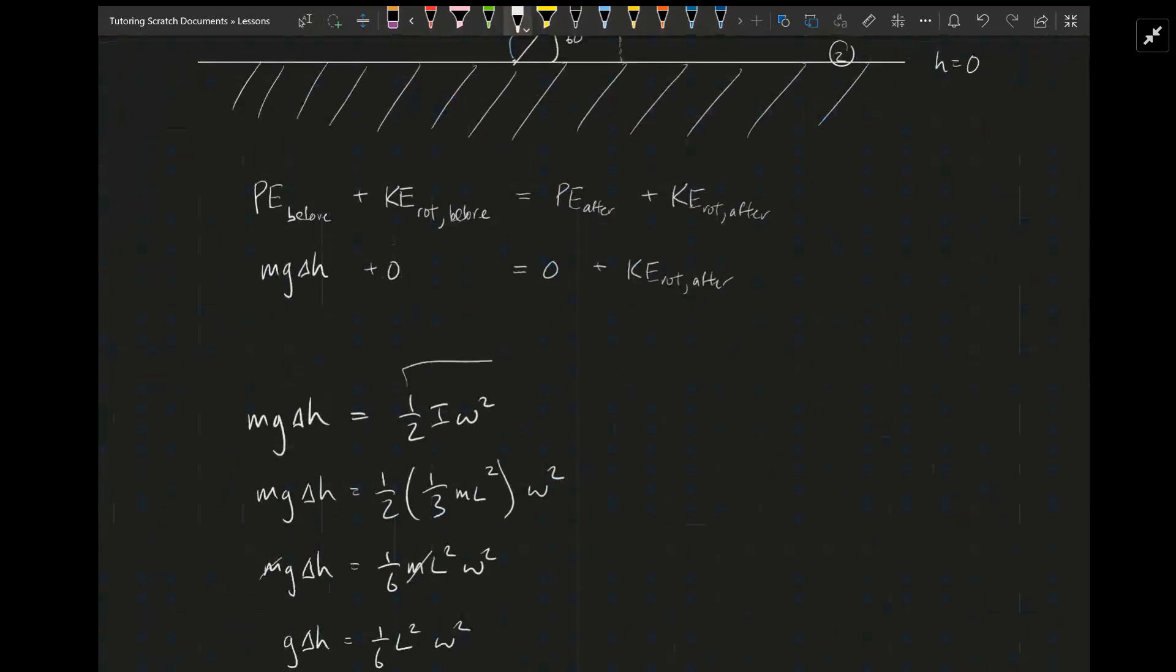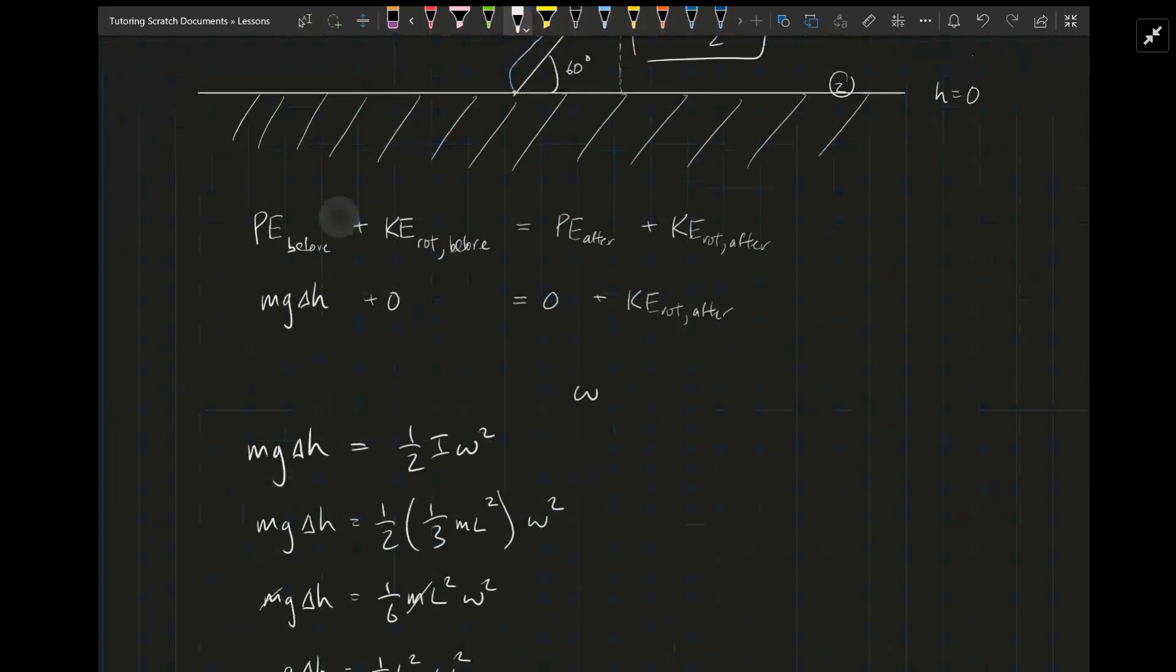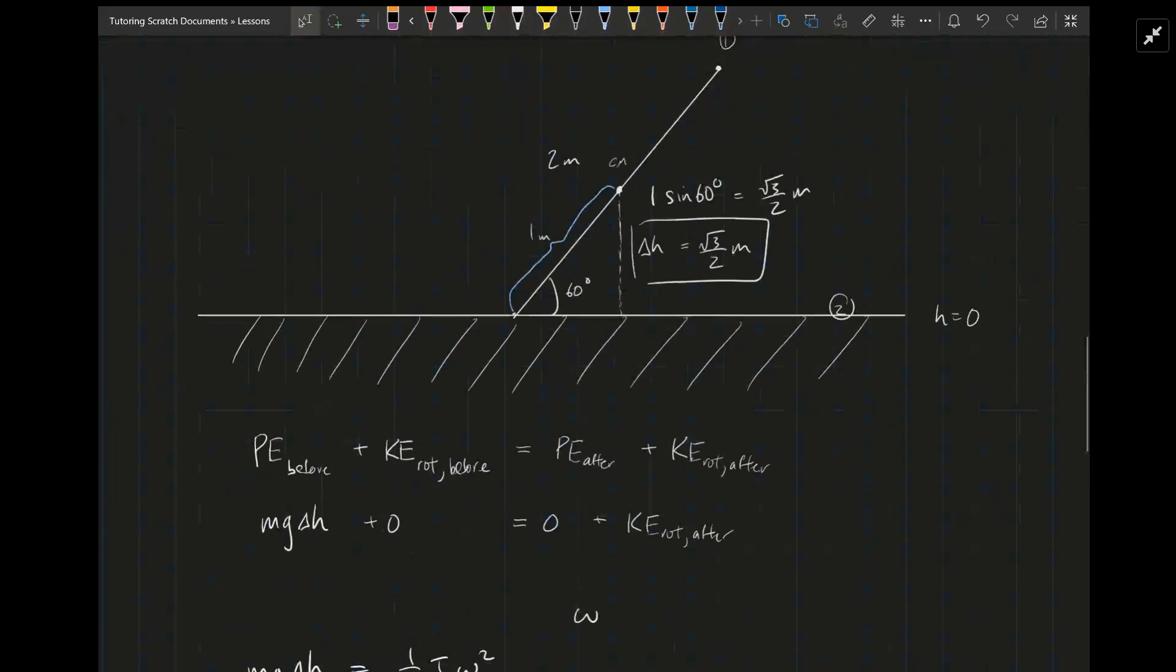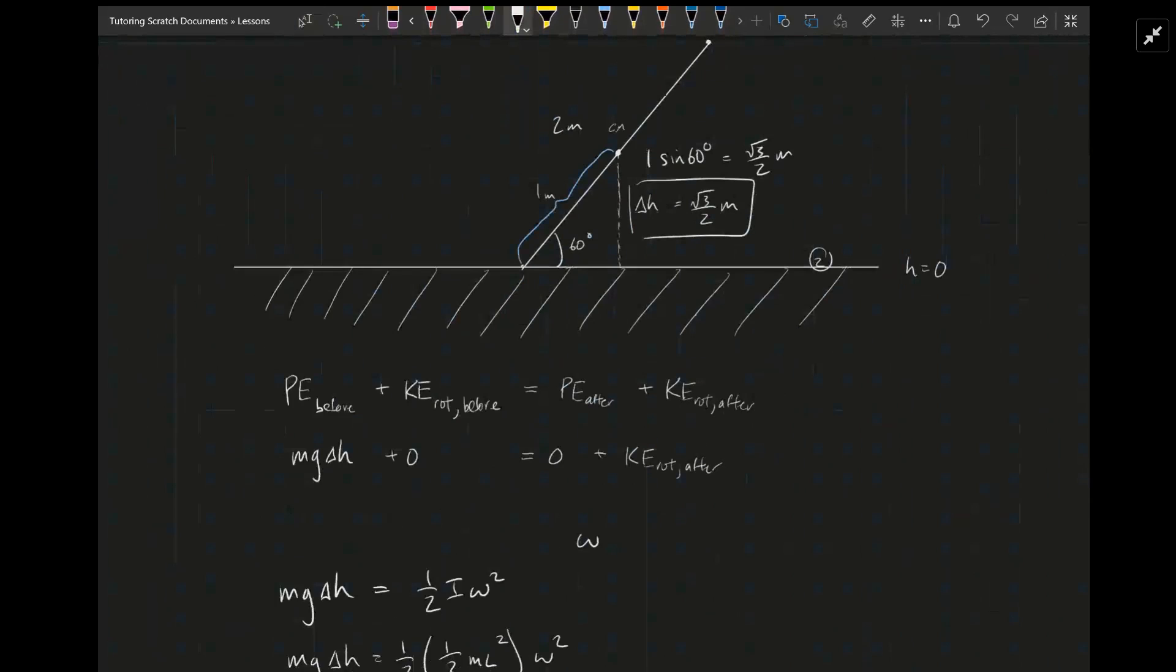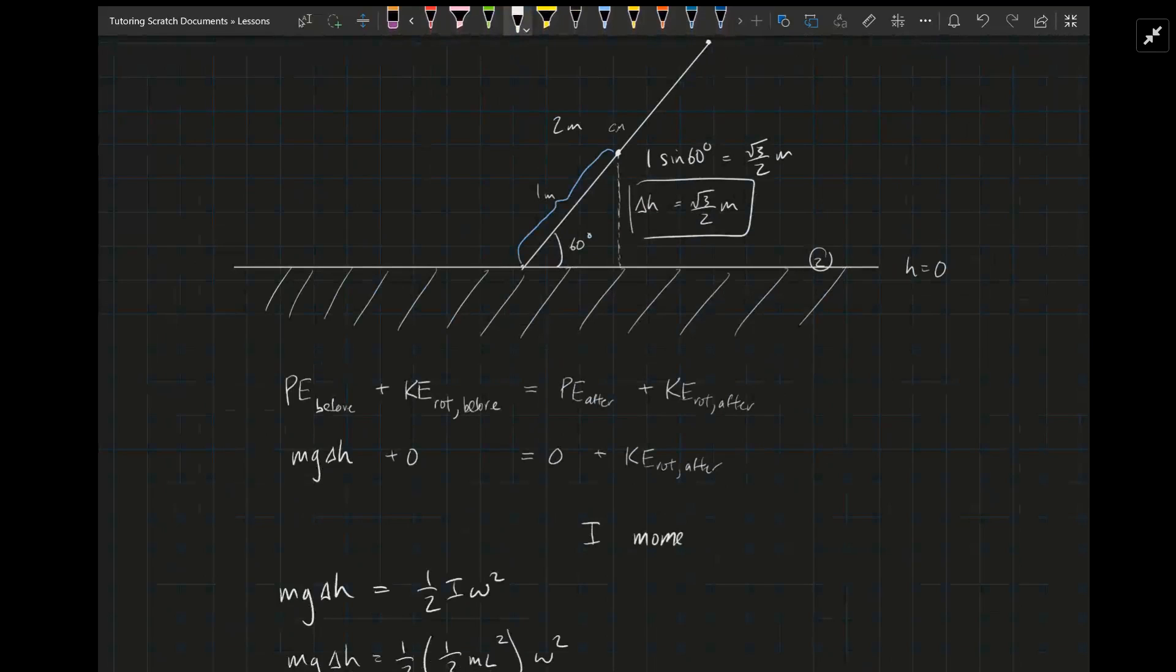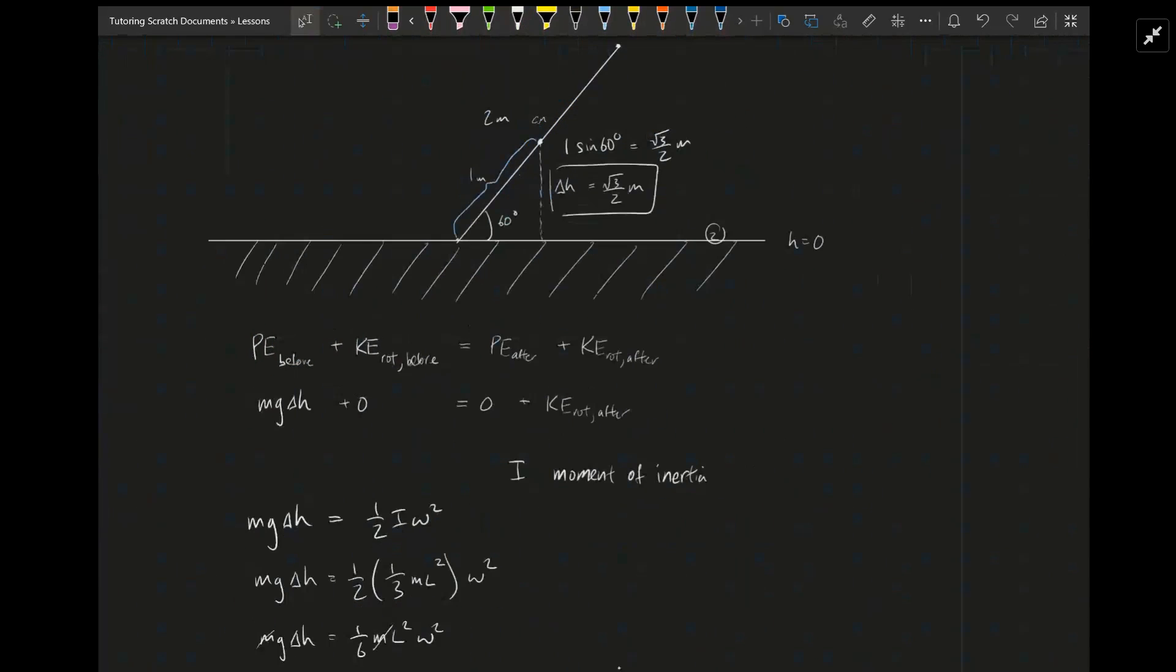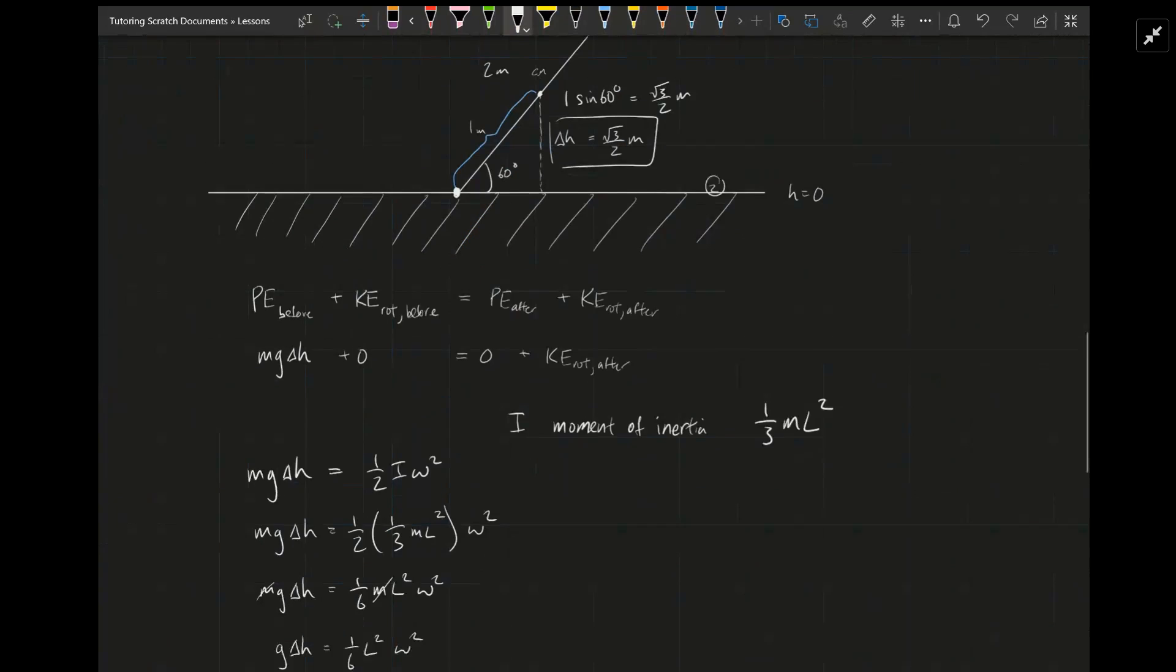Now what is I, what's omega? Omega is the angular velocity of the rod, which we will use to find the speed of the tip. I is the moment of inertia of the rod, and that's something you would normally just look up. For a rod of uniform mass, the moment of inertia when it's spinning about its end is one third times the mass of the rod times l squared. So that's I.